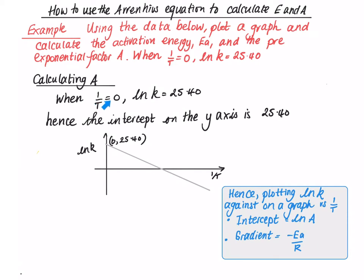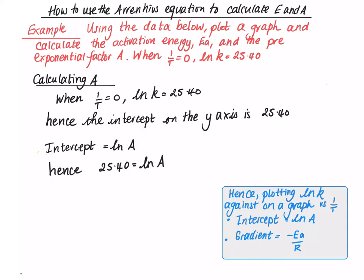So when 1 over T equals 0, ln K equals 25.4. So the intercept on the Y axis is 25.4. The intercept is ln A, so ln A is 25.4.